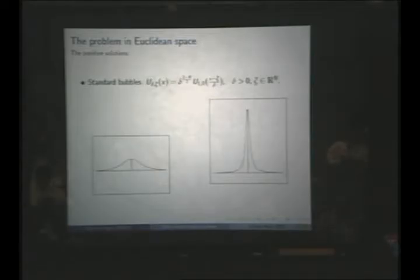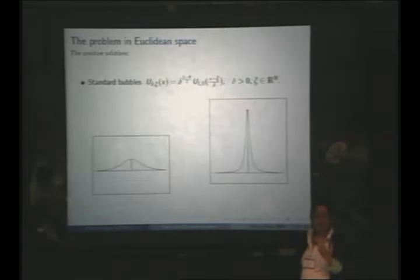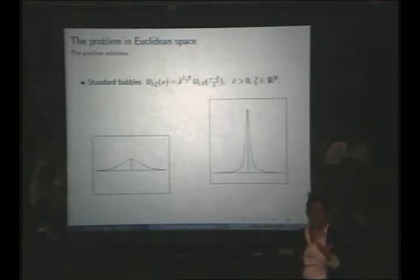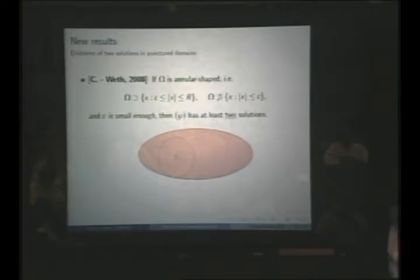Now let me tell you something about new results. So far we have either non-existence or existence results. But in the Coron case — where we know there is a positive solution in a domain with a tiny hole — are there more solutions? A colleague of mine, Tobias Weth, currently at Mainz University in Germany, and I looked at the same problem Coron did: take any domain and make a tiny hole. Coron gives us one solution, but Tobias and I managed to prove there are two solutions.